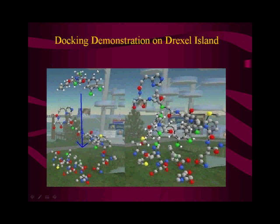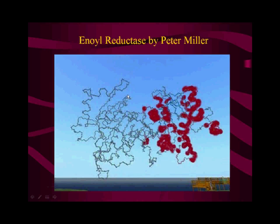Other educational things you can do: you can actually demonstrate molecular docking. Here is the receptor site of enol reductase, one of the malarial enzymes we're trying to inhibit. You just walk up to this molecule, click it, and it slowly meanders down and fits right into the docking site — and you can walk around it. It's a bit hard to see where the hydrogen bonds are, but it's a good exercise. If we put the entire enzyme here we would run out of PRIMs — the fundamental units — so we only put the pocket.